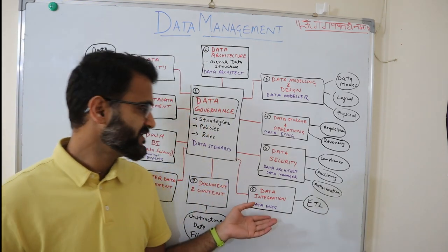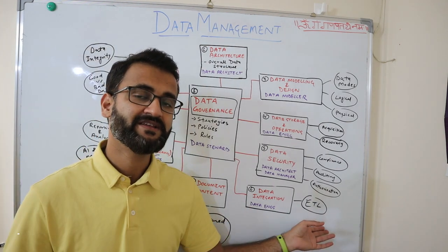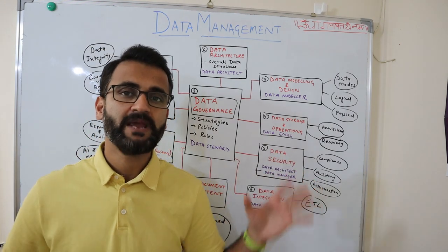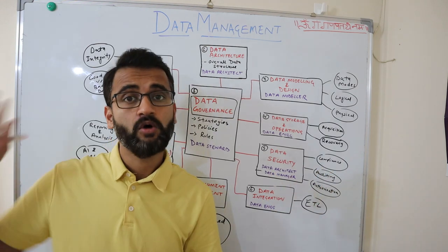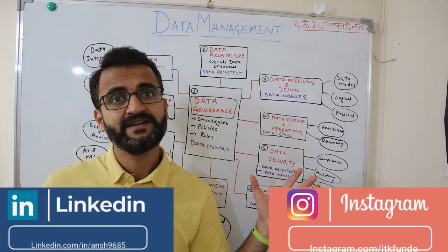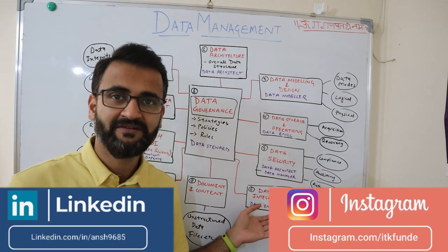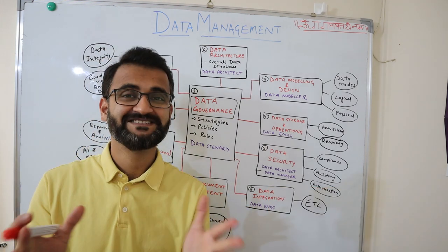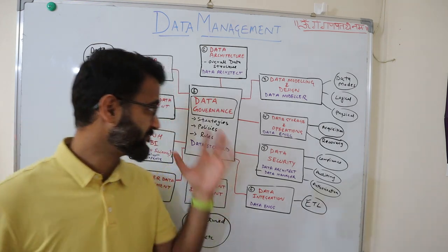The sixth area is data integration, which can be explained in one word: ETL. Data integration is all about creating integration pipelines — defining how data will be acquired from the source and then loaded into the destination, setting up the whole integration layer. Again, the data engineer is a very prominent role here, which is why data engineering is becoming so important — a data engineer covers a lot of these areas.